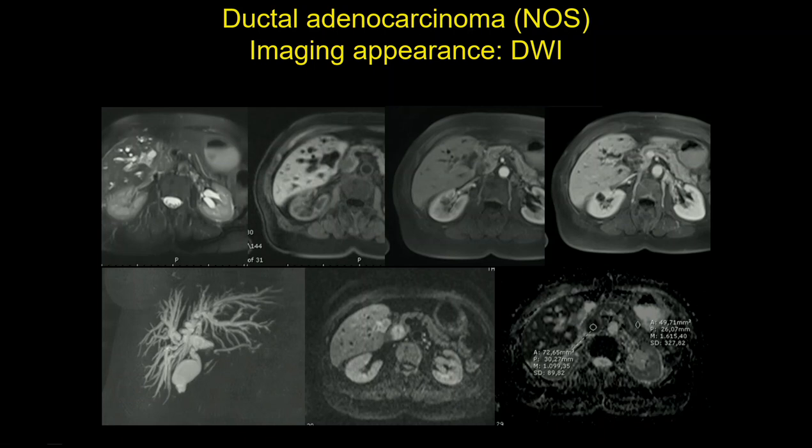DWI can be an interesting tool to see the lesion, which is clearly visible, and can also be an interesting tool to differentiate tumor from mass-forming pancreatitis. We will discuss this later as part of the tools we can use to make a differential diagnosis.